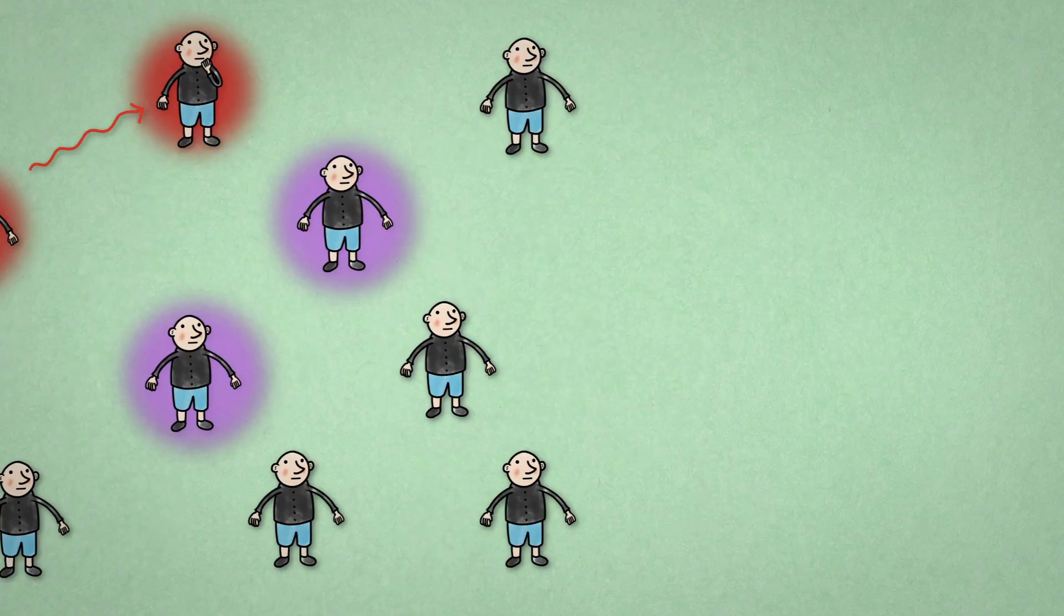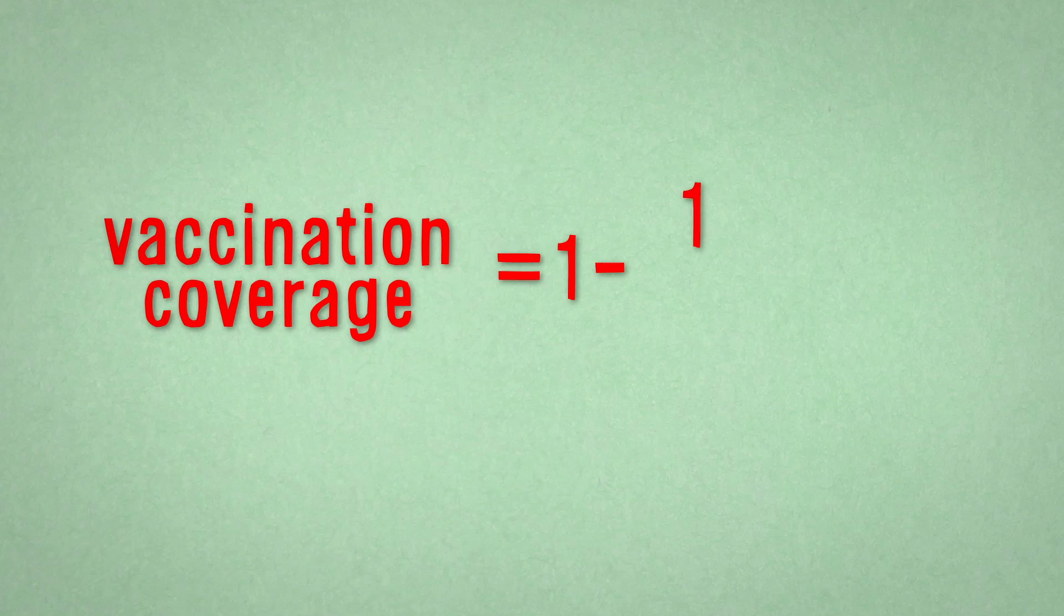The higher the reproduction number, the higher the percentage of the population that you have to vaccinate. With measles, this can be as high as 95%.